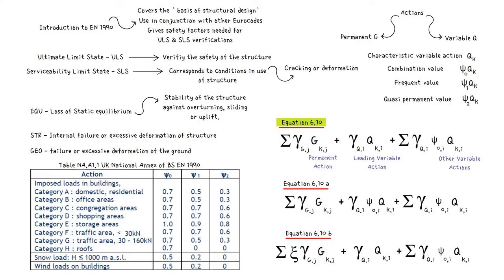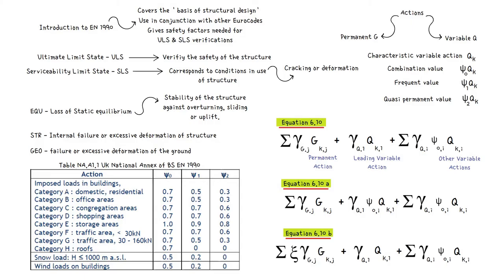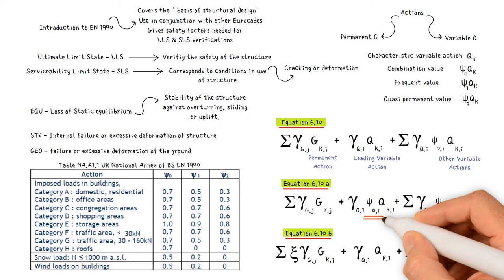For the second option, we have equations 6.10a and 6.10b, and we need to check the least favorable of these two. Equation 6.10a is similar to 6.10b except we have an extra combination factor applied to the leading variable action. Equation 6.10b is the same as equation 6.10 except that we have the term ξ, which is a reduction factor. The value of ξ is taken from the national annex and is 0.925.